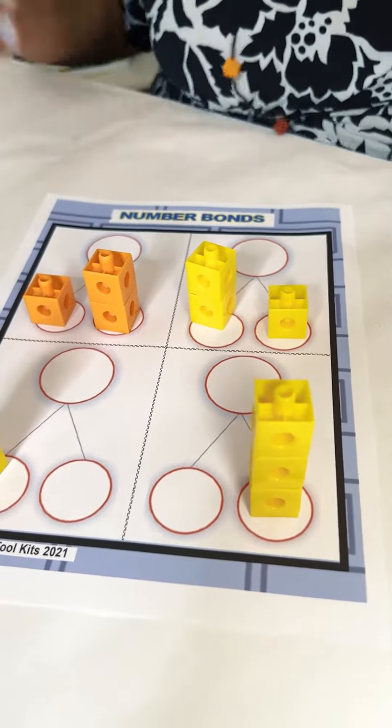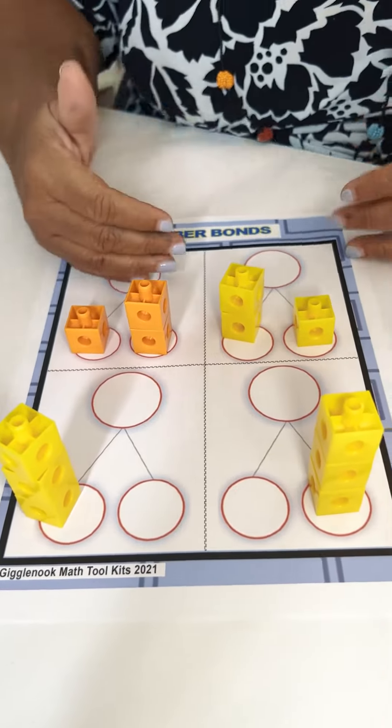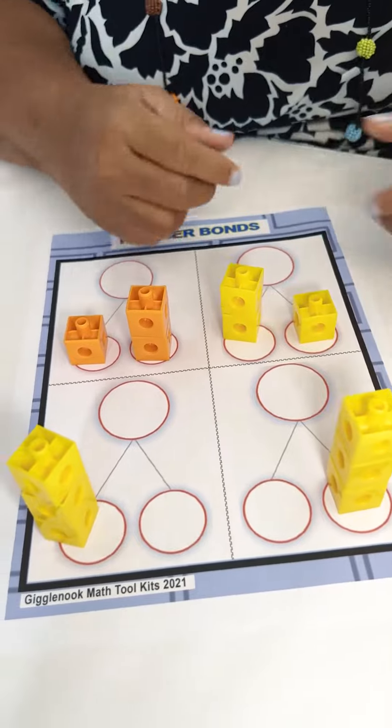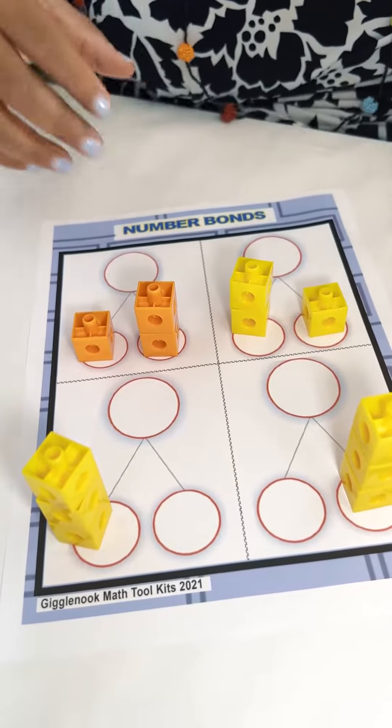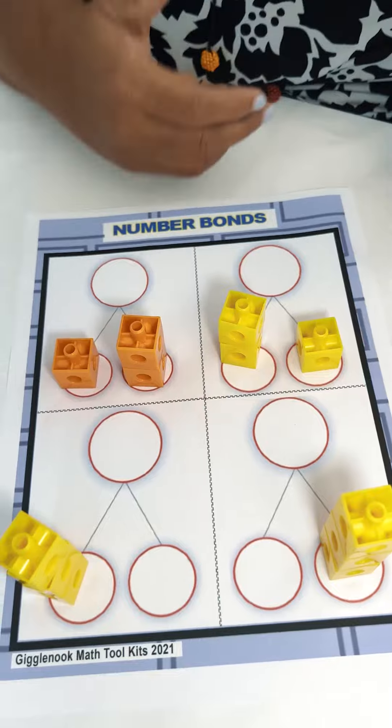All of those things connected, right? So the kids see it, build it, then they sketch it, and then they write the number sentence. A cycle of understanding. And you want to connect those things. All right.